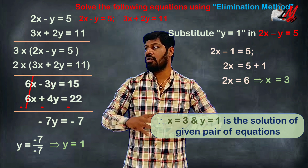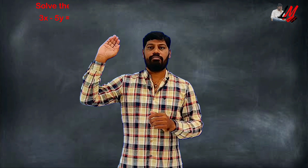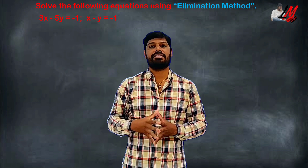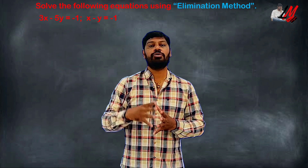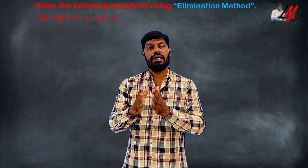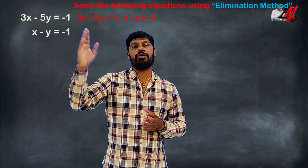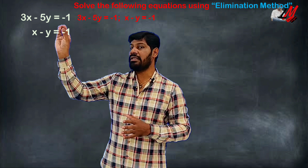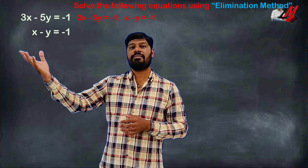We have one more example in this video. Solve the pair of equations using the elimination method. First equation: 3x minus 5y equals minus 1. Second equation: x minus y equals minus 1. These are two different equations. We write them: 3x minus 5y equals minus 1, and x minus y equals minus 1. We will eliminate x.